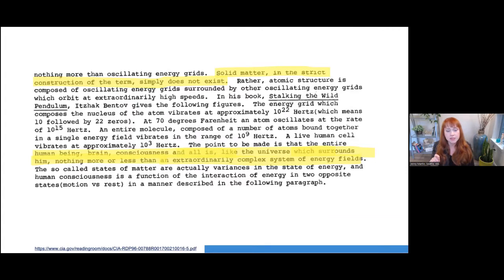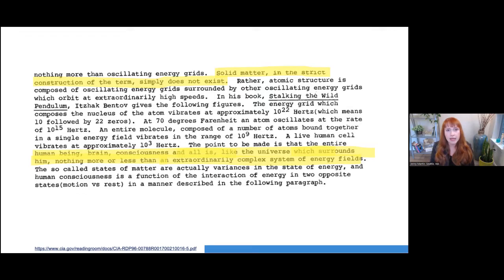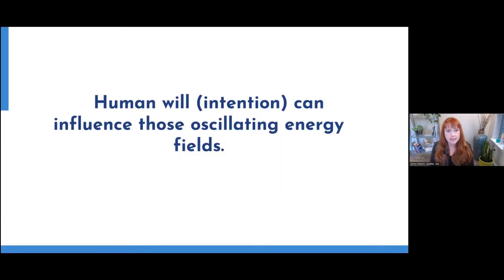This is another excerpt from the same intelligence briefing. He says that solid matter in the strict construction of the term simply does not exist. And at the bottom, he says: 'The point to be made here is that the entire human being — brain, consciousness, and all — like the universe which surrounds him, is nothing more or less than an extraordinarily complex system of energy fields.' This is a document from the CIA. What this whole process the CIA is talking about is: can we intentionally use our consciousness to access these possibilities?